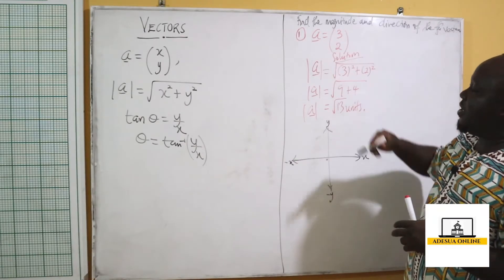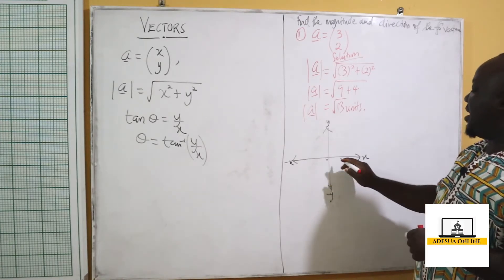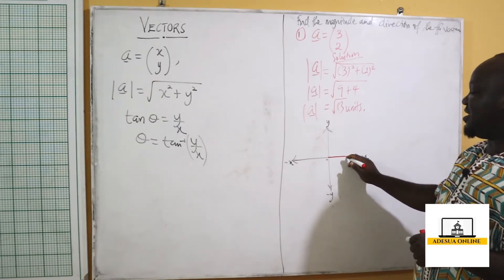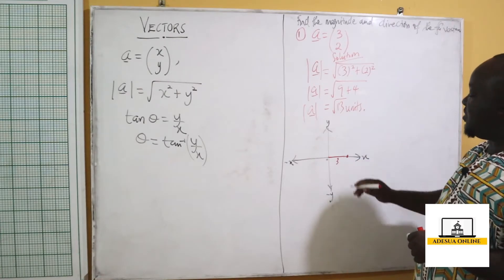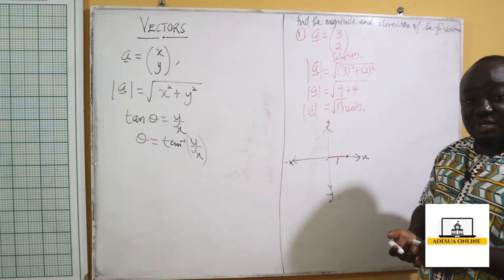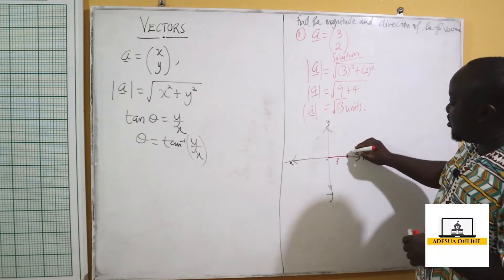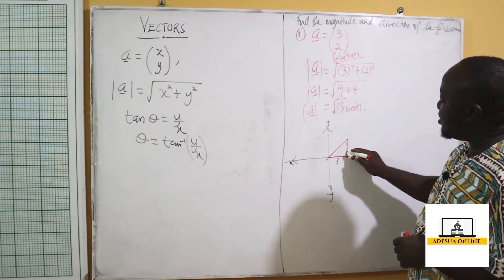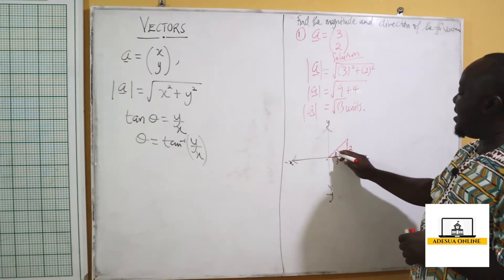So if I have 3 here, I'm going to move 3 units to the right, because x is positive, so I'm moving in a positive direction. From this point to this point is 3 units. Then my y is also 2, which is also positive, which means I'm going to move 2 units up. I join this to this, so I get my right angle of 90 degrees. This is 2 units, and this is my angle theta.